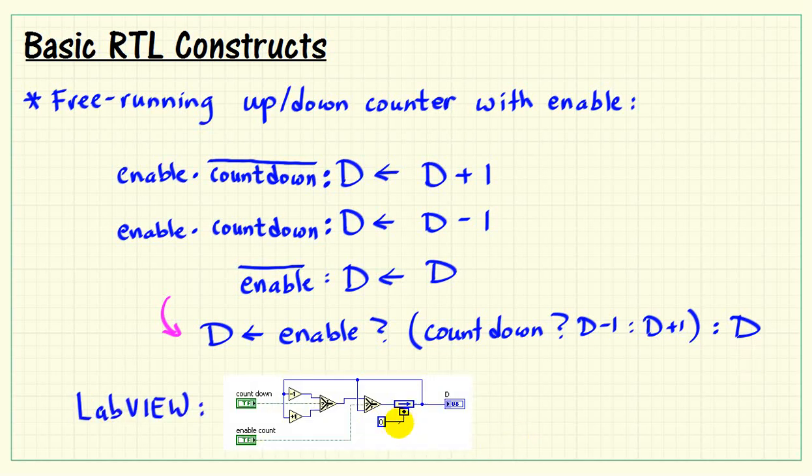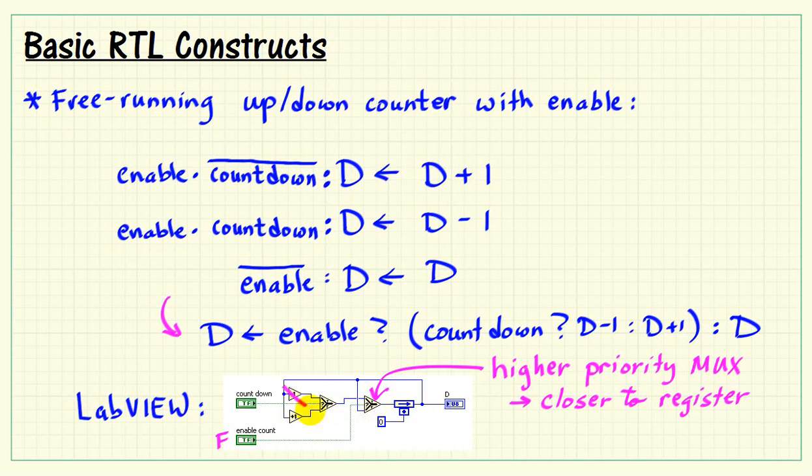Now in LabVIEW, this is essentially the same as the structure we were just looking at. I've added an additional selector, or 2-to-1 MUX here, that operates from the enable count input. We see that this essentially is our higher priority signal, or this is the higher priority MUX, because it is closest to the register. So we see that if enable is false, it simply picks whatever is in D, and that's the end of the story. All the rest of the circuit structure gets ignored whenever enable count is false.